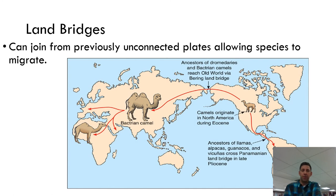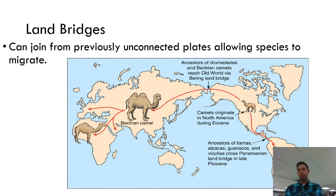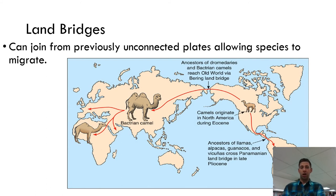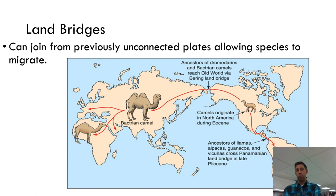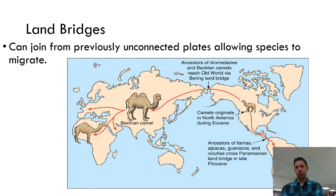Land bridges are the opposite of isolation — previously unconnected land masses connect and allow species to migrate. Migration to new places also leads to biodiversity, as species eventually evolve to fit their new environment. For example, camels originally evolved in Asia and walked to North America across the Bering Strait land bridge — the same bridge used by the ancestors of Native Americans, who originally evolved in Africa and migrated through Asia into the Americas. That species of camel eventually went extinct in North America, but others migrated down to South America.